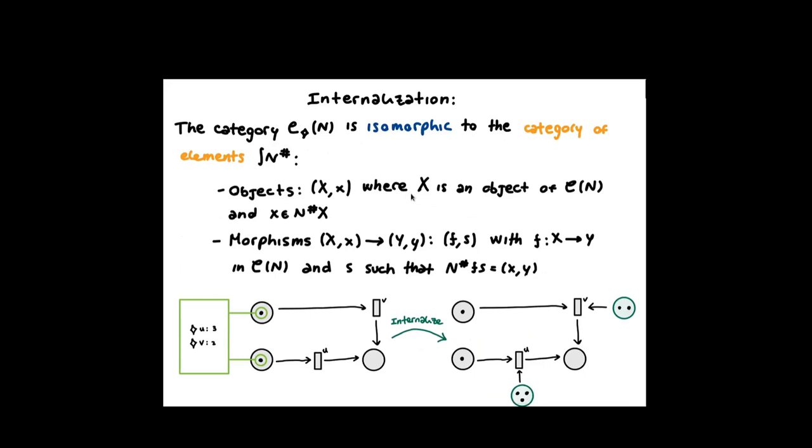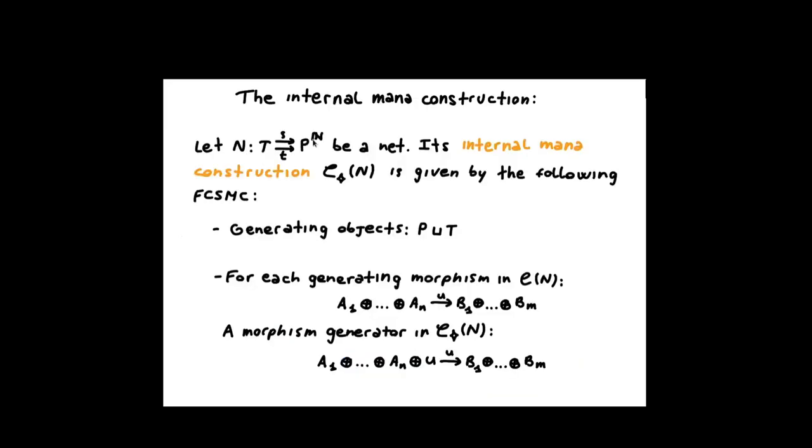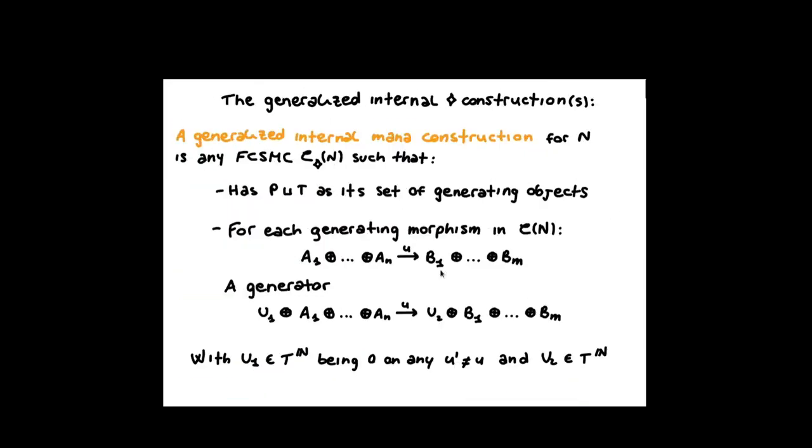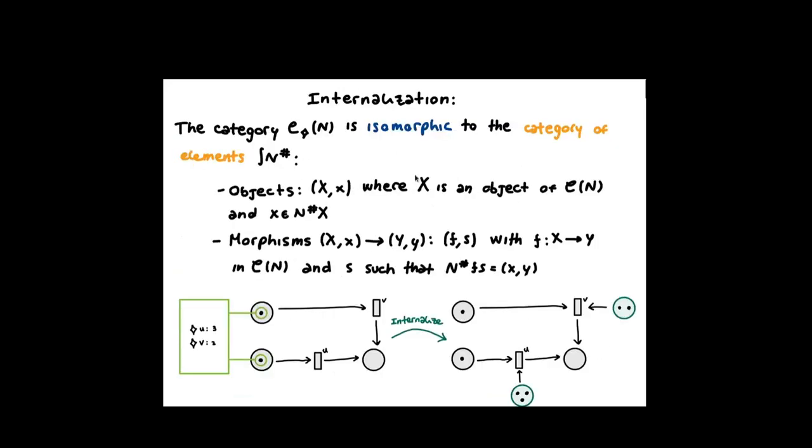We have a procedure called internalization, where we can actually relate these internal and external semantics. This is also known as Grothendieck construction in category theory. The idea is that the mana category that is defined here is isomorphic to the category obtained as follows. Objects are couples, where X is an object of C N, and small x is an element of the set we mapped X to. Remember that N-sharp is our functor to span. Morphisms are dealt accordingly. When you actually do the calculations, it turns out that you are taking an external mana construction on the left, and you are exactly mapping it to a category that is equivalent, so basically the same from a categorical point of view, to the one on the right.